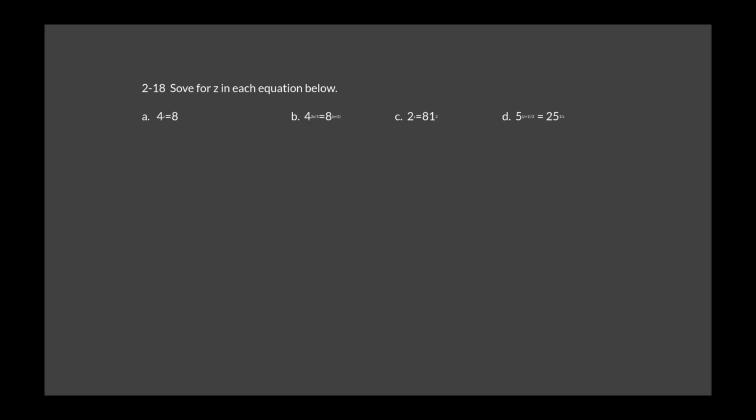For problem 2-18, we have four problems to solve for Z, where Z is in the exponent of each equation. This is part of exponential work and getting ready for logarithms. The simplest approach is to put both sides in common bases — write them so they have the same base, cancel out the bases, and then just solve for Z in the exponent.